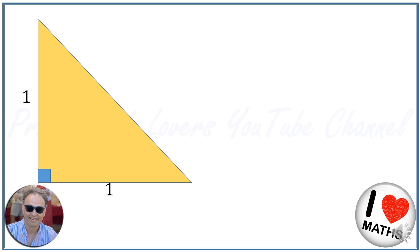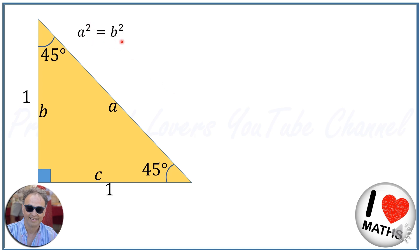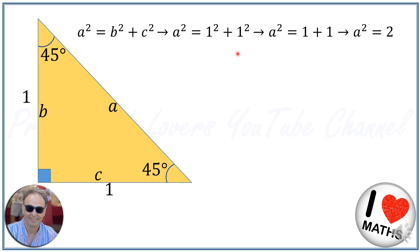Forming a perfect square sliced diagonally. Because the legs are equal, the angles will be equal and can be calculated as 180 degrees minus 90 degrees divided by 2, so each angle is 45 degrees. If we call the hypotenuse A and the other two legs B and C, using the Pythagorean theorem we get A squared equals B squared plus C squared, or A squared equals 1 squared plus 1 squared, so A squared equals 2.